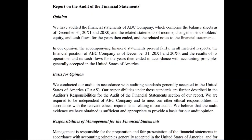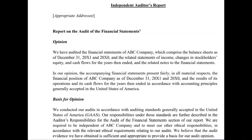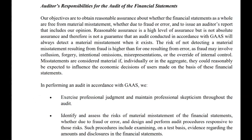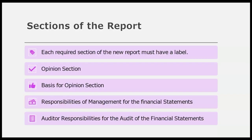After those two sections, the order of the remaining sections doesn't matter. Yes, there has to be a Responsibilities of Management section, but that doesn't have to be third — it just can't be first or second. Yes, there's going to be an Auditor's Responsibility section for the audit of the financial statements, but that doesn't have to be fourth, as long as it's not first or second. The four required sections of the new report must each have a label: Opinion, Basis for Opinion, Responsibilities of Management for the Financial Statements, and Auditor's Responsibilities for the Audit of the Financial Statements.